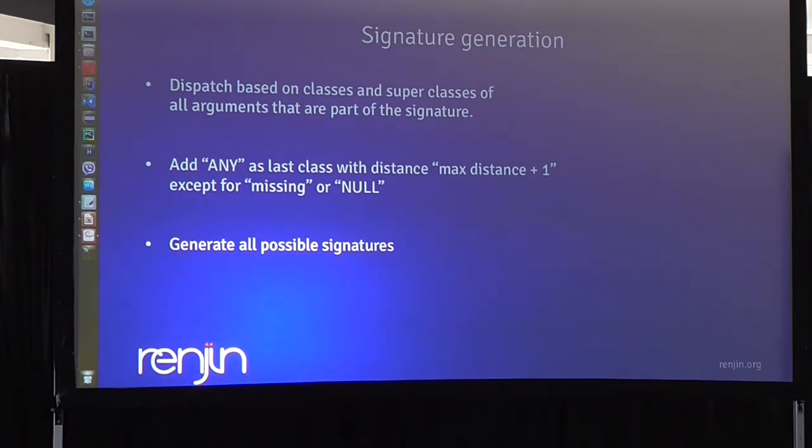When you have the classes, for example for the first argument, then you add the distance. The class of the input argument has a distance zero, the super classes have a plus one depending on how deep they are inherited, and then at the last you add 'any', which is the max distance plus one basically. There are exceptions for missing and not - those are handled differently. You generate all possible signatures and then you do a method table lookup.